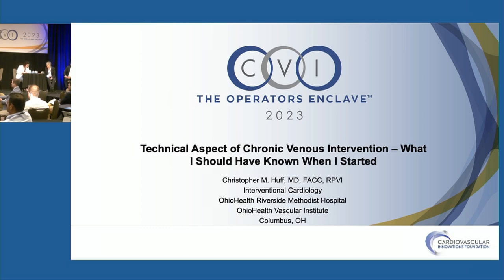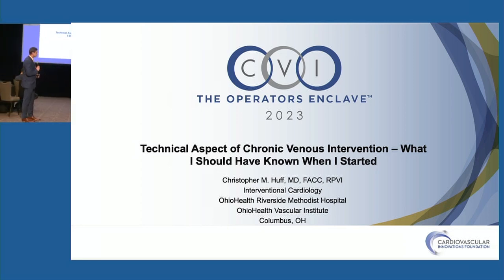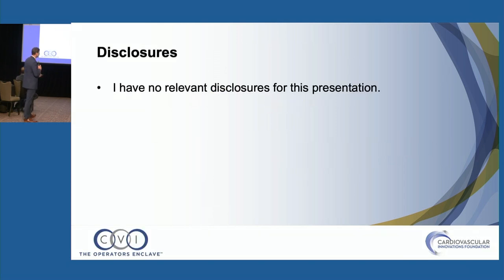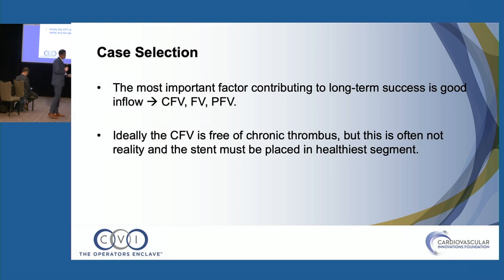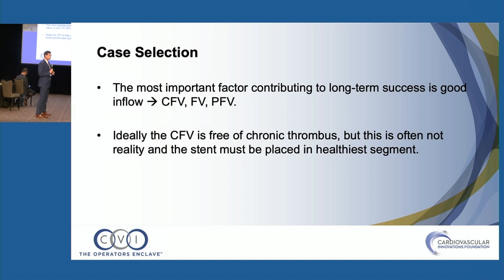We're going to change gears and talk about deep venous disease. I have eight minutes to give you ten years' worth of pearls. When beginning to treat chronic deep venous disease, you need to be very careful about case selection. If you want to be successful, choose cases with good venous inflow — infrainguinal inflow. If you're placing stents in the IVC and iliac veins, those stents need to stay patent, and patency depends on flow from below.